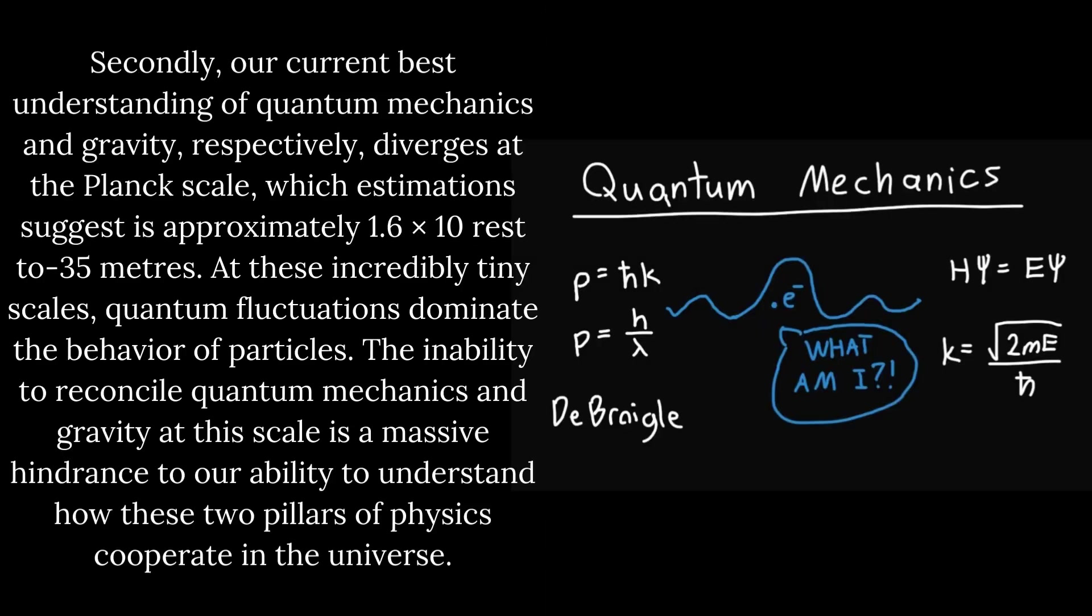Secondly, our current best understanding of quantum mechanics and gravity, respectively, diverges at the Planck scale, which estimations suggest is approximately 1.6 times 10 to the minus 35 meters.